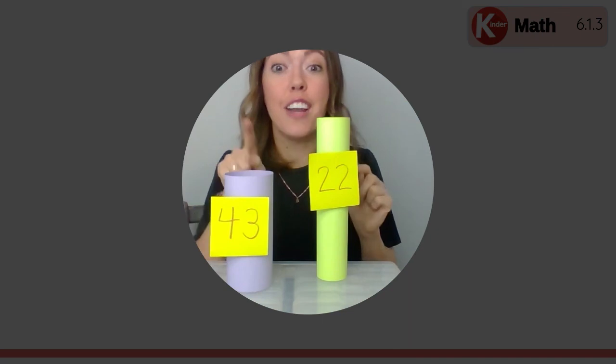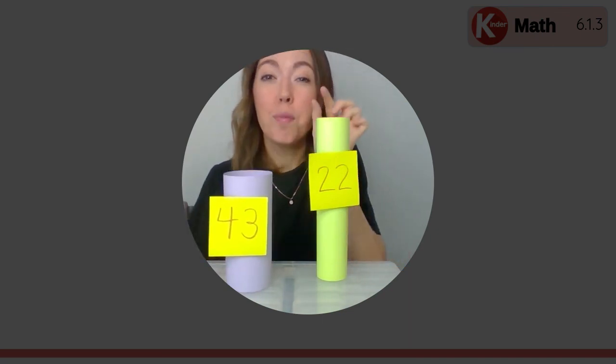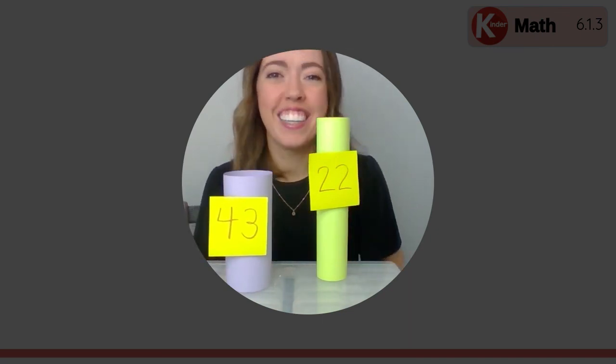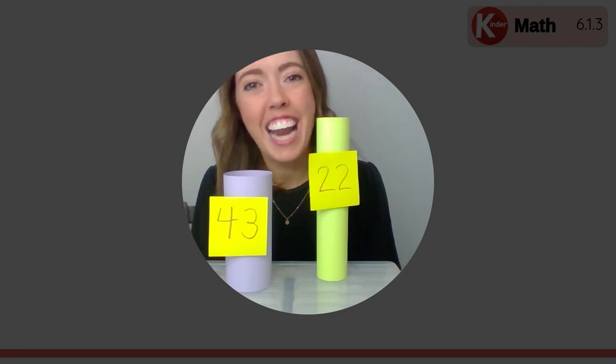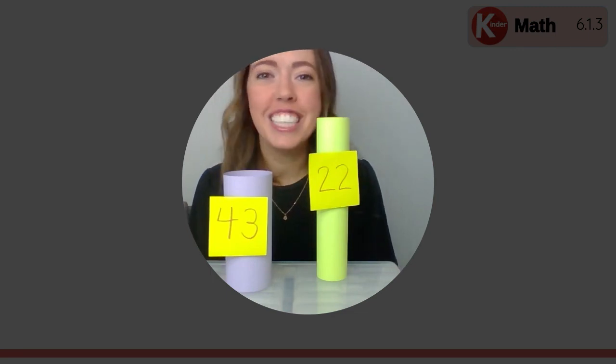Which number is bigger? Which one held more cubes? 43, yes. Which number is smaller? 22 is smaller. 22 is less than 43 because it held a smaller, or a less amount of cubes. Thank you for counting with me today. I'll see you soon.